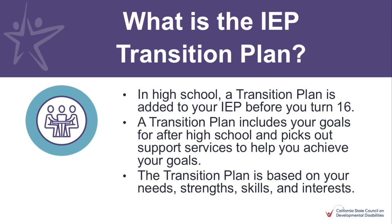What is the IEP transition plan? In high school, a transition plan is added to your IEP before you turn 16. A transition plan includes your goals for after high school and picks out support services to help you achieve your goals. The transition plan is based on your needs, strengths, skills, and interests.